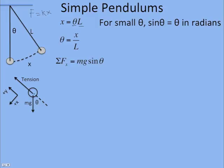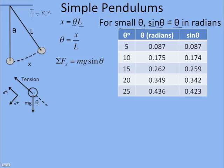Here it's a constant mg times sine of theta, and we know sine theta is not a linear function. But for small angle theta, sine theta is almost equal to theta in radians.